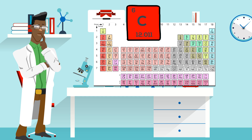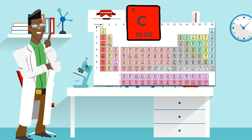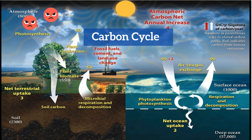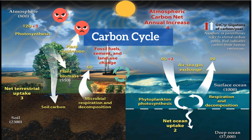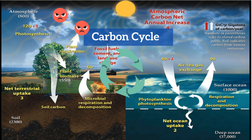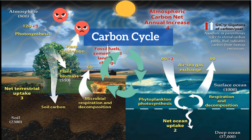Carbon is an element that is crucial to every living organism. It is also a key component of our atmospheric air, and it cycles through our earth, the ocean, biotic factors, abiotic factors, and the air constantly.